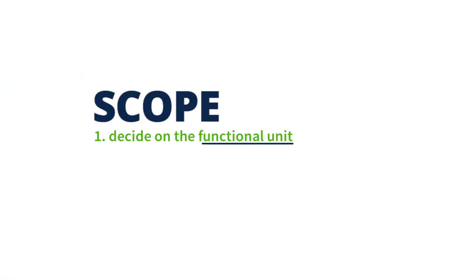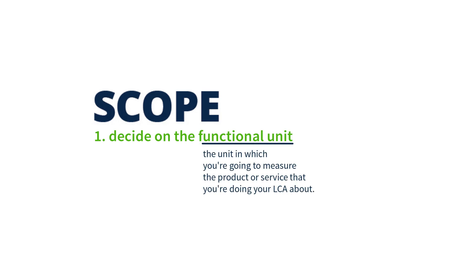In the scope part, you first decide on a functional unit, which is the unit in which you're going to measure the thing that you're doing your LCA about — for example, a product, service, or a certain function. In this video, I'm going to take the example of one apple pie, so I want to measure the environmental impact of one apple pie. This is my functional unit.